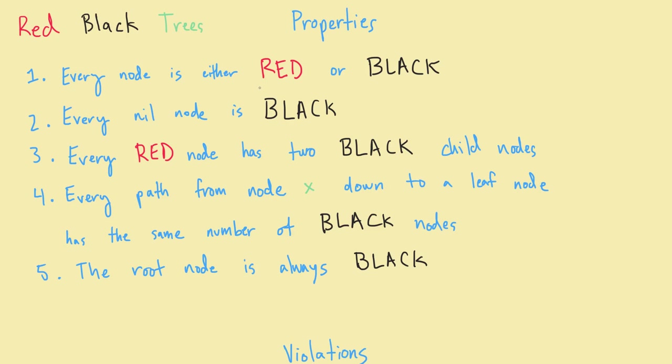Also, every nil node is a black node. We consider them to be a black node, and we also consider them to be significant. One of the balancing properties is that every red node can only have two black child nodes. Whether or not it's an actual node or it's a nil node, it has to be the color black. So another way to put this is that a red node cannot have a child node that has the color red. There can't be two red nodes in a row.